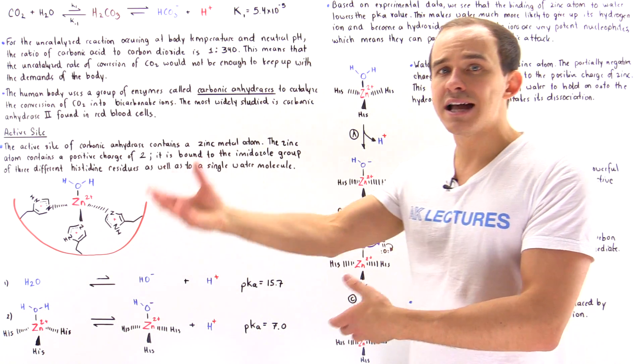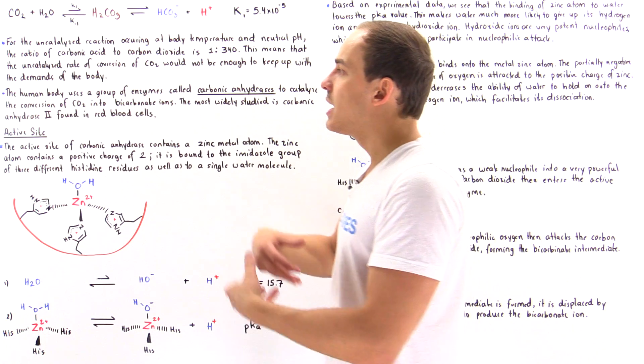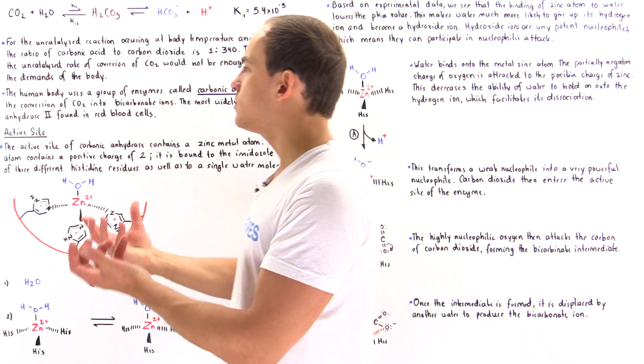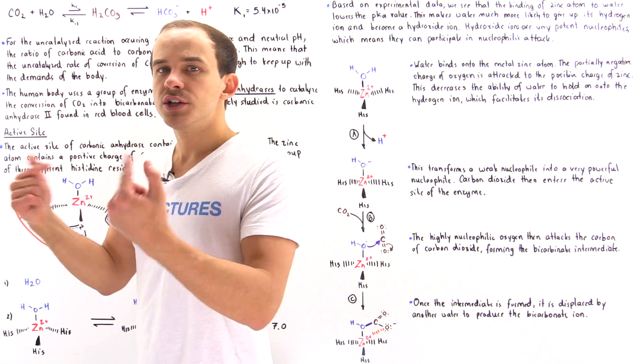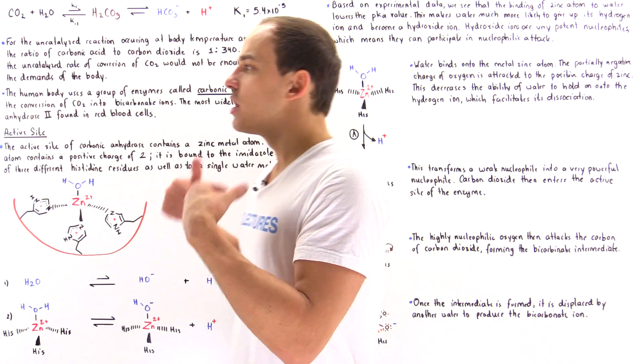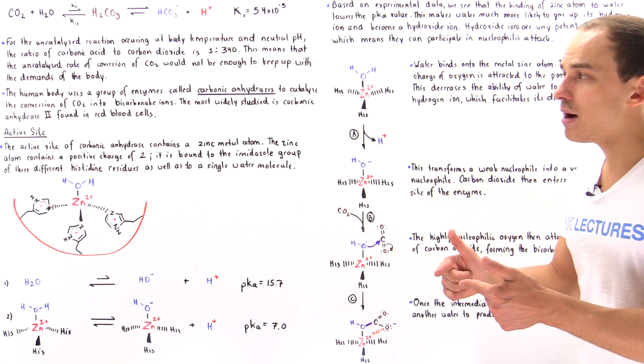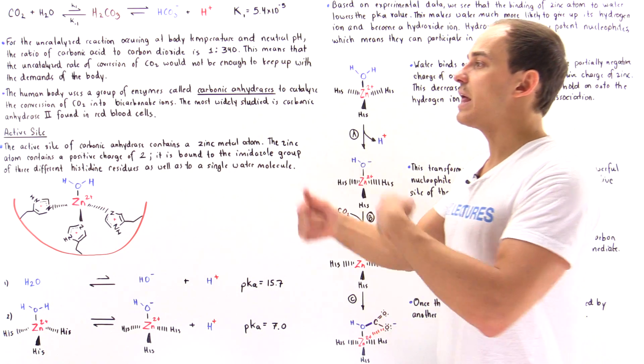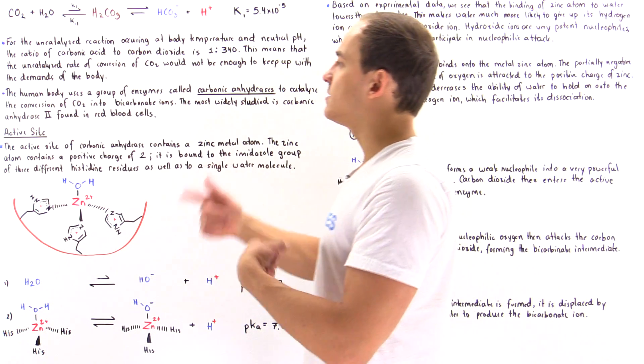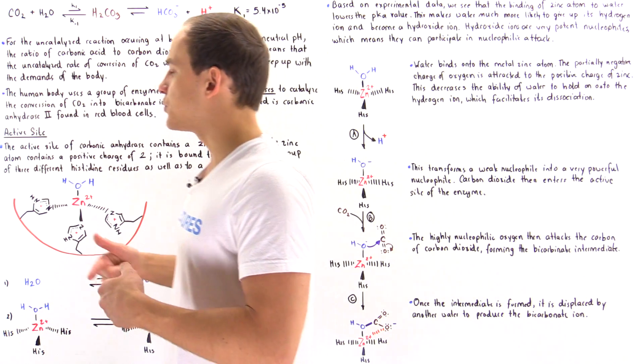Then the plants and trees can basically use the CO2 to produce sugar molecules, and then we can eat the sugar molecules. And that process basically continues.